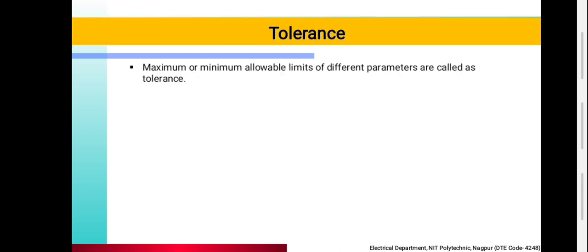Now what is tolerance? Tolerance में यह होता है कि — जैसे आप frequency consider करो, frequency हमारी 50 Hz है, but frequency 50 Hz accurate नहीं मिलती. उसमें थोड़ा plus 5%, minus 5% — कभी वो 45 Hz frequency मिलेगी आपको, कभी 55 Hz मिलेगी. मतलब यह एक tolerance है कि इतना थोड़ा सा आगे-पीछे होता है, plus-minus. यह जो tolerance है, यह जो BIS है, वो हमें देते हैं — maximum और minimum allowable limits of different parameters. इतने ही parameters allow हैं, उसके आगे आप नहीं जा सकते.